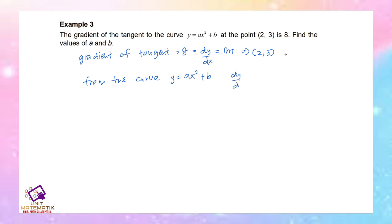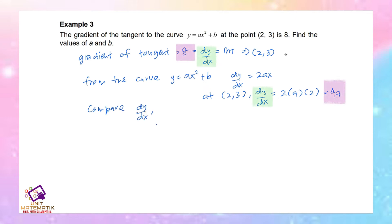dy/dx = 2ax. At the point (2, 3), dy/dx = 2 × a × 2 = 4a. Comparing this to the gradient value: 4a = 8, therefore a = 2.